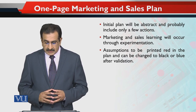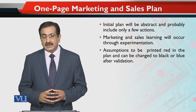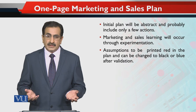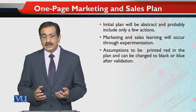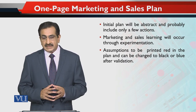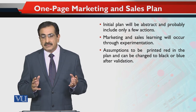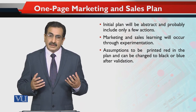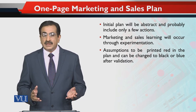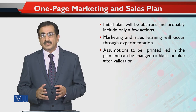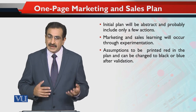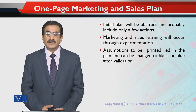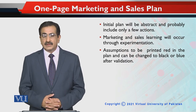Assumptions to be printed in red in the plan — in can be changed to black or blue after validation. Initially jin assumptions ki bunyad pe aap marketing plan bana rahe hain, woh aap red mein likh len. Aur jab yeh assumptions validate ho jayen — market size ke hawalay se, initial customers ke hawalay se, product ke different features ke hawalay se, competitors ke actions ke hawalay se — jo aapki assumptions hain woh shuru mein red ink mein likh lete hain, which reflects that this is to be validated. Aur jab woh validate ho jati hai, jab aap experimentation kar lete hain, feedback aur response le lete hain market se, aur pass information aur data ikhatta ho jata hai, to phir aap us ko black ya blue mein likh sakte hain.